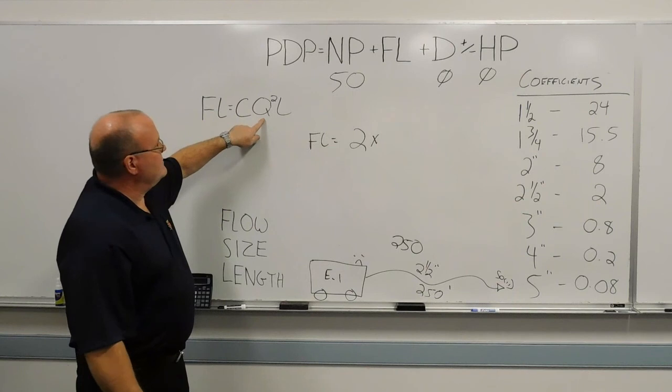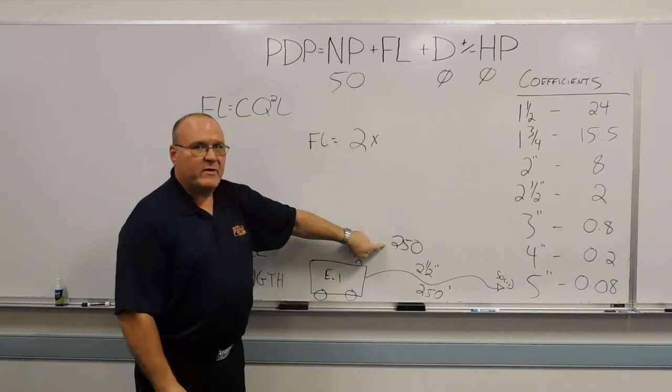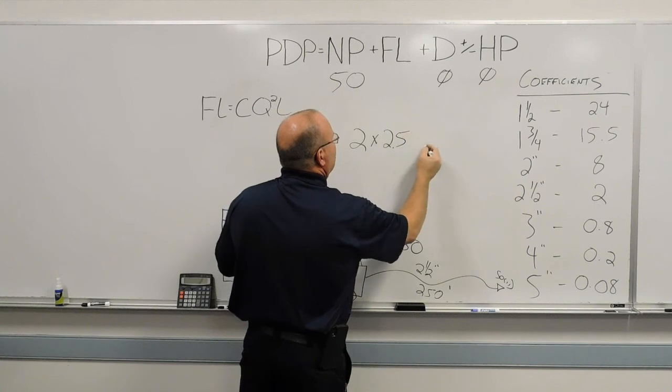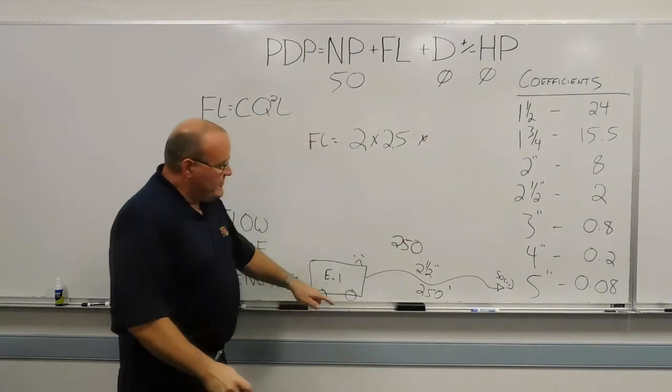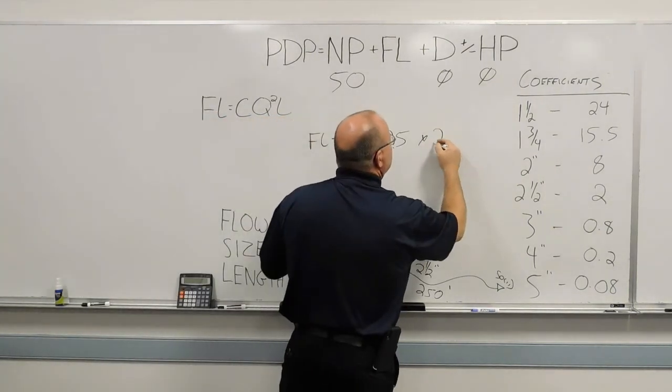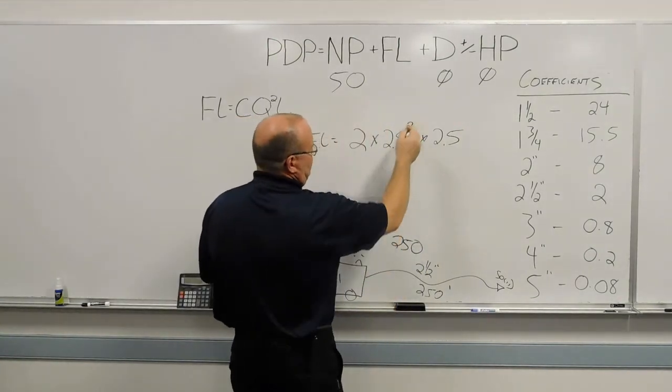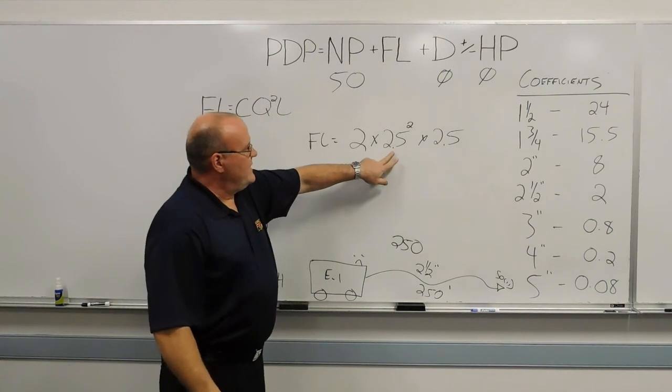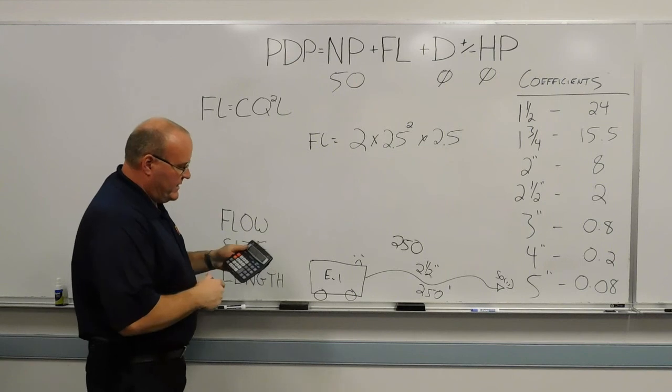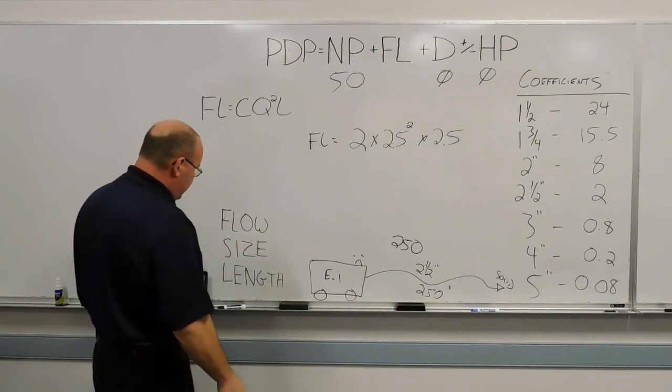The Q squared part, quantity squared in gallon per minute, is 250 gallons a minute. Divide that by 100 to get 2.5. And then the length, 250 feet, also divided by 100, 2.5. So there, the first step in the middle, we're going to square that 2.5. I'll get my handy calculator out here. And we're going to end up with 6.25.